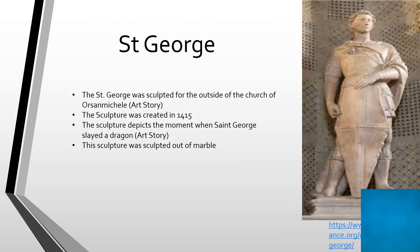The next sculpture is Saint George. Saint George was sculpted outside of the church of the Orsanmichele. The sculpture was created in 1415 and depicts the moment when Saint George slayed a dragon. This sculpture was made out of marble, one of the most common stones he carved out of. You can also see his really humanistic features, which is the main style of what he did.